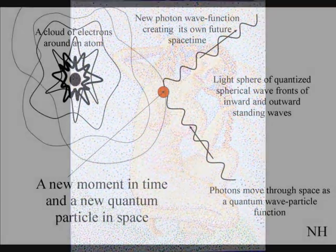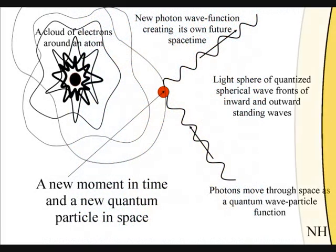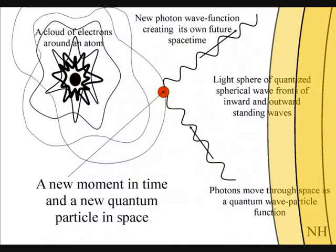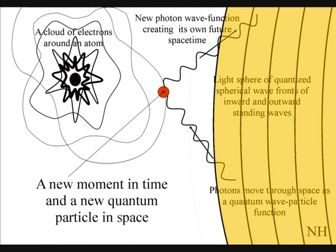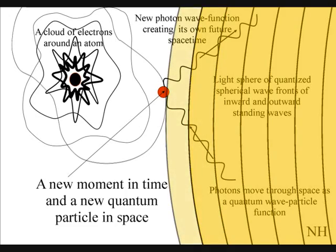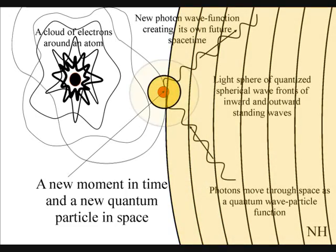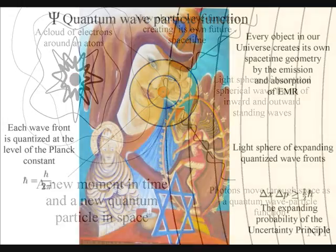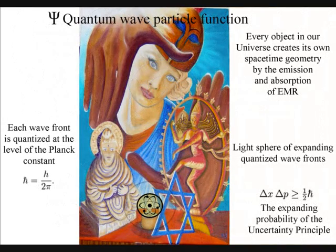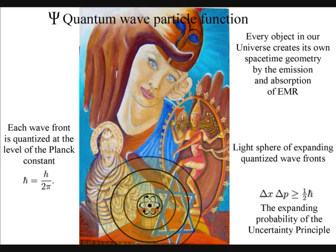Just like ripples on a pond, each atom will radiate out light spheres of quantized wavefronts. Each wavefront will create a probability of a future event. When a wavefront comes in contact with the electrons on the surface of another atom, it will create a new moment in time and space, in the form of a photon-electron coupling.